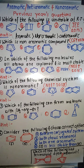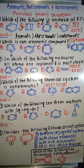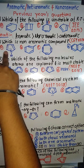The next question is: which is the non-aromatic compound? The conditions for aromatic are: cyclic, conjugated, planar, and odd number of pi bonds. Anti-aromatic conditions are: cyclic, planar, conjugated, and even number of pi bonds. Looking at the options — one compound is cyclic, conjugated, planar with an odd number of pi bonds, so it is aromatic.